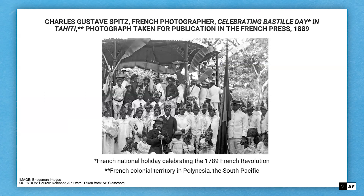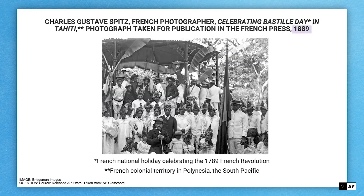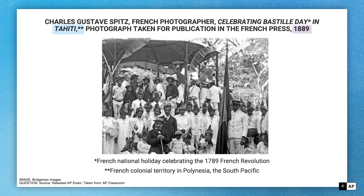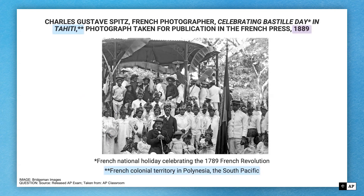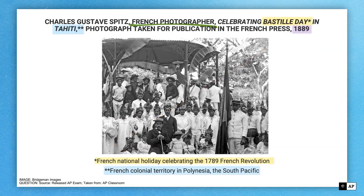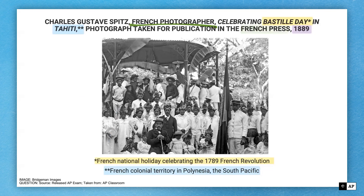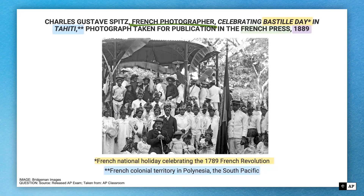Our next set of questions is based around a photograph. Again, we break down the source information. Check the date: 1889, late 19th century. The location is Tahiti — and there's a gloss telling us it's a French colonial territory in Polynesia in the South Pacific, which helps us locate time and place. The photographer is French, the people are celebrating Bastille Day — another gloss tells us that's a French national holiday celebrating the French Revolution — and this photograph was taken for publication in the French press. So this photograph is destined for France.